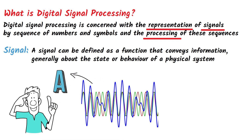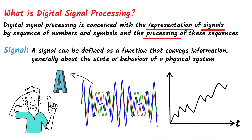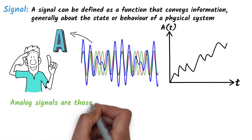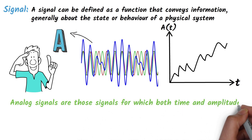Mathematically, signals are represented as functions of one or more independent variables. If we take the same example of audio signals, the amplitude of my voice can be plotted as a function of time. Time on the x-axis and the corresponding amplitude on the y-axis at each instance of time give us a signal. This signal is defined continuously in time and has continuous amplitudes, making it an analog signal.